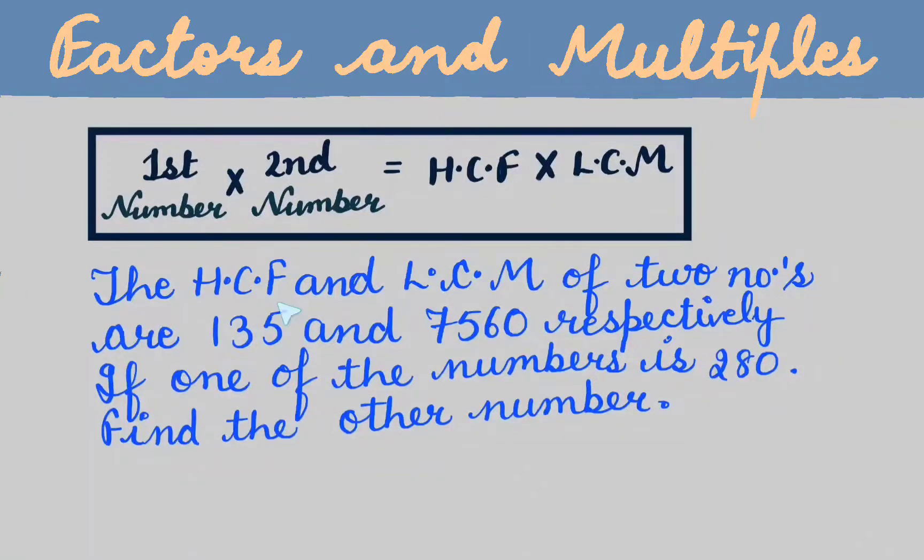Today we will do the question: the HCF and LCM of two numbers are 135 and 7560 respectively. If one of the numbers is 280, find the other number. First of all, we have to write what is given.